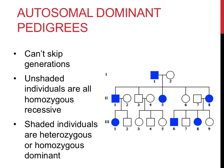Autosomal dominant traits, such as Huntington's disease or hypercholesterolemia — genetic high cholesterol — show up in individuals that have one copy of the dominant allele. If you have even one form of this gene, you would have that particular trait or disorder. Since you can't be a carrier for an autosomal dominant trait — if you have one allele, you have the trait — these traits can't skip generations. All unshaded individuals would be homozygous recessive. Keep in mind that all you can do is disprove certain possibilities; just because a pedigree could be autosomal dominant doesn't mean it couldn't be autosomal recessive.